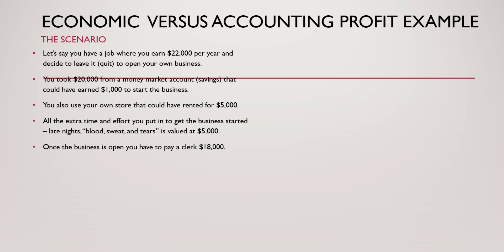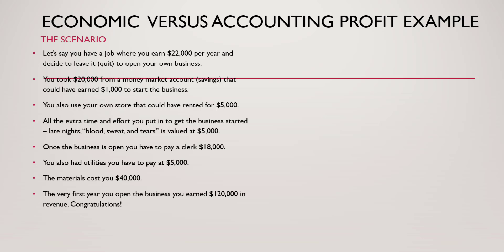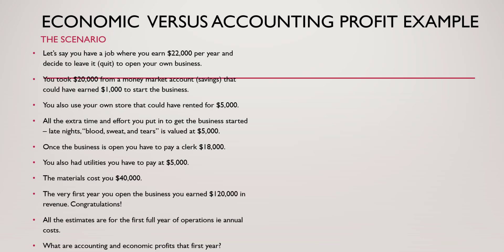All the extra time and effort — the late hours to get things going — all of that extra entrepreneurial energy you put into your own business is valued at $5,000, but you're using it for yourself. Once the business opens, you hire a clerk and pay that clerk $18,000 per year. You also have utilities of $5,000 and materials costing $40,000. In the first year, you earn $120,000 in revenue. We want to figure out the accounting and economic profits.